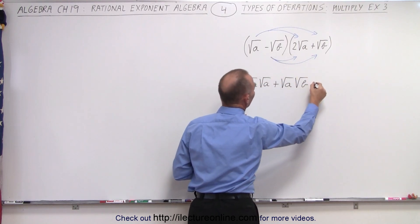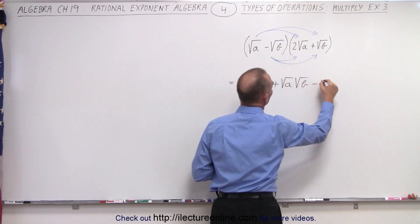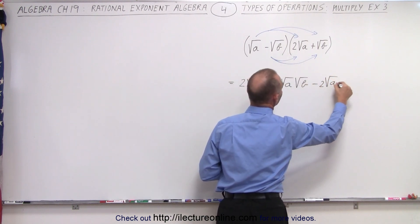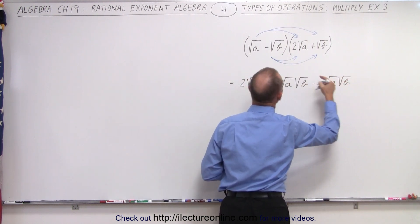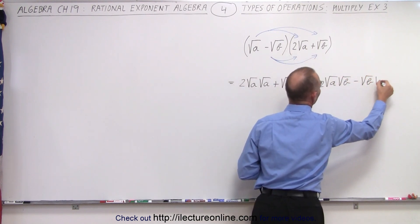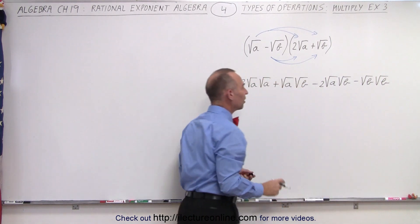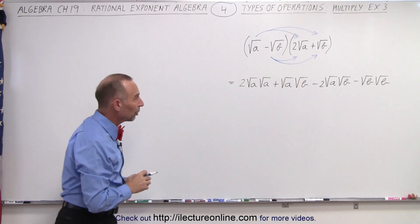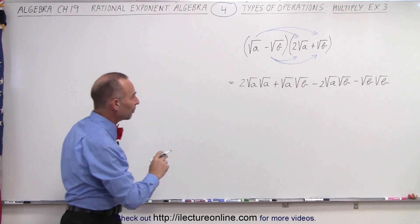plus because I have a negative sign there. So minus, here we have two times the square root of a times the square root of b. And then this times this, that would be minus the square root of b times the square root of b. We simply wrote it out as we're multiplying it together. Now we're going to simplify.